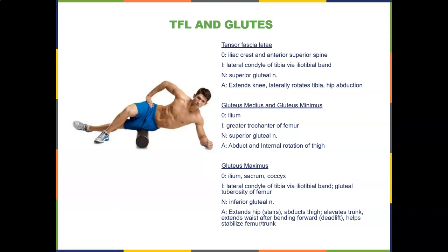The gluteus medius and minimus originate on the ilium, insert into the greater trochanter of the femur, and are supplied by the superior gluteal nerve. They abduct and internally rotate the thigh. To target glute medius and minimus specifically, turn your toes down slightly during wall slides.